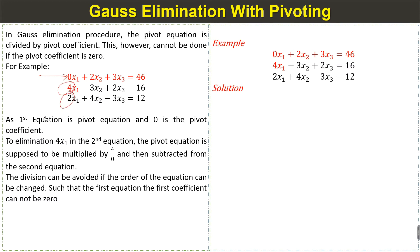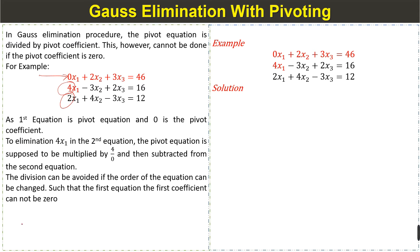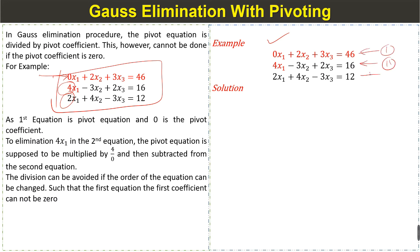To apply the Gauss elimination method, we perform pivoting: we swap the equation that has a zero pivot coefficient with one that has a non-zero first element. We then solve the example with pivoting and apply the Gauss elimination method.